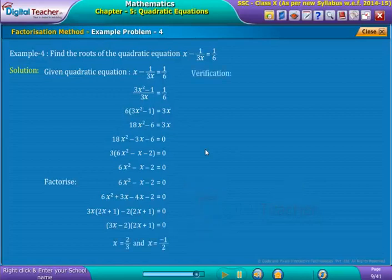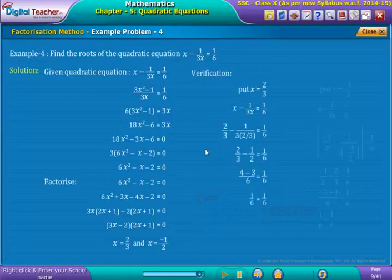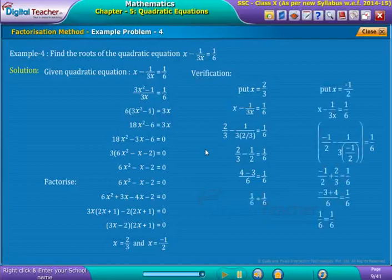For verification, substitute the obtained two x values, 2 by 3 or minus 1 by 2, in given quadratic equation. As we get both LHS and RHS equal, the obtained roots are right.